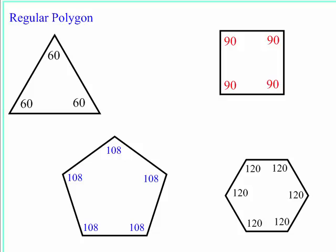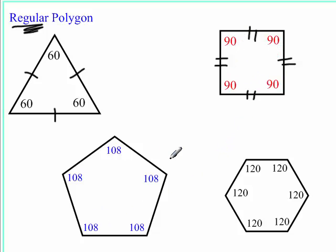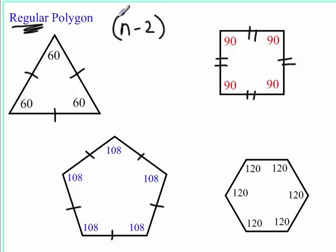A regular polygon means all sides are congruent and all interior angles are congruent as well. For a square, all sides are congruent and every interior angle is 90. For a regular pentagon, all sides are congruent and the interior angles are 108 degrees. The general formula is to find the sum of interior angles first, then divide by the number of sides.